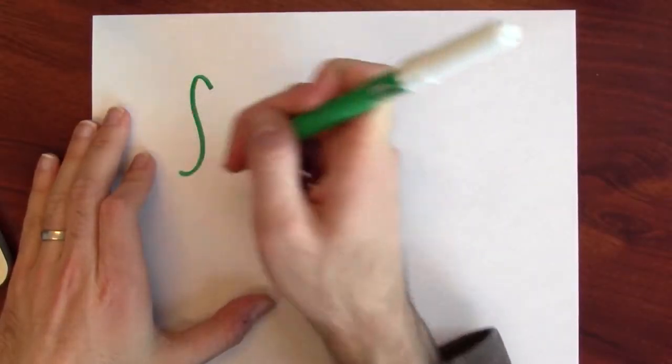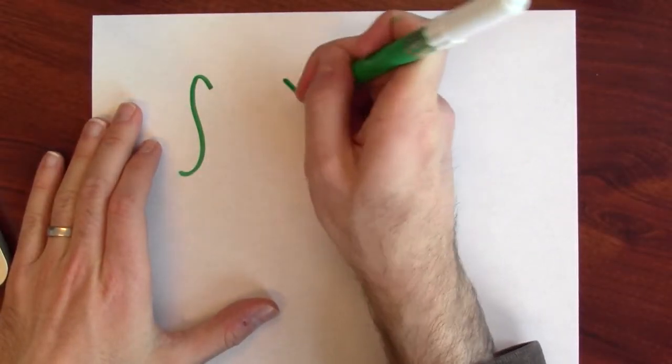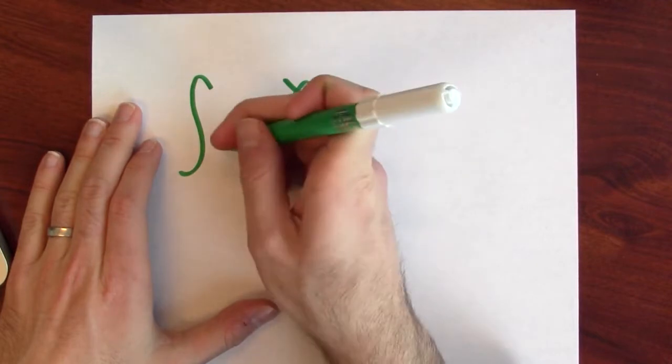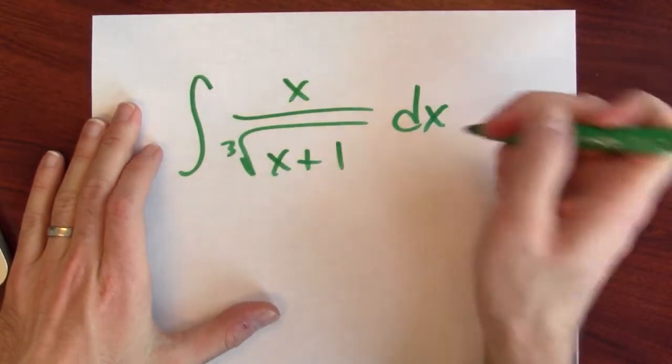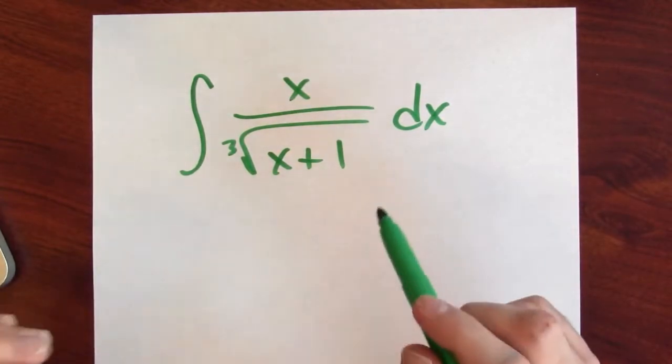Generally speaking, anti-differentiating things with radicals is difficult. For example, let's try to find an anti-derivative of x over the cube root of x plus 1 dx. Let's try to anti-differentiate this.